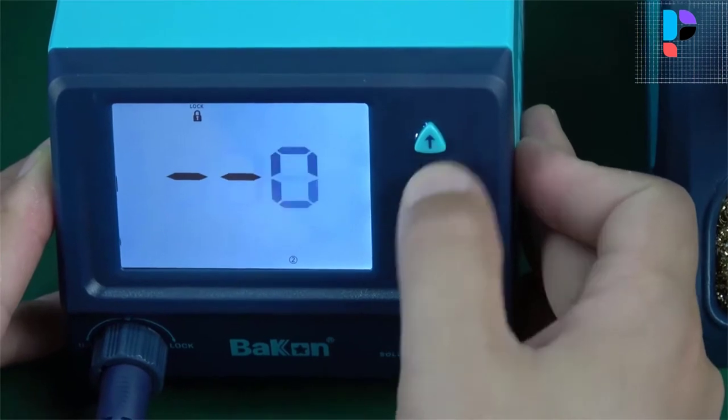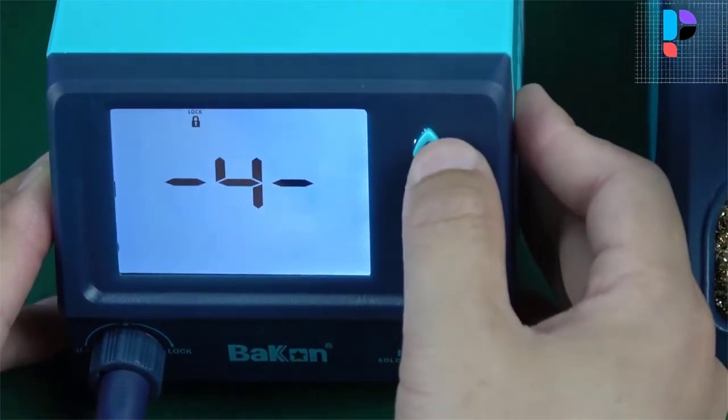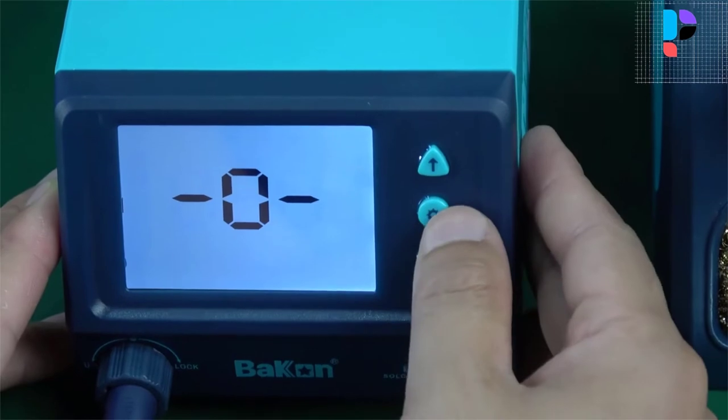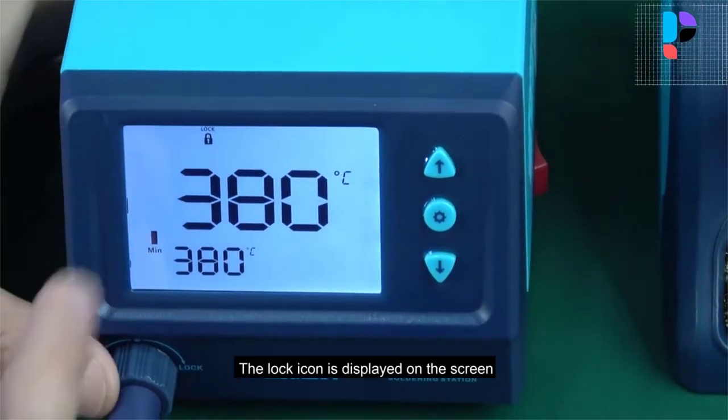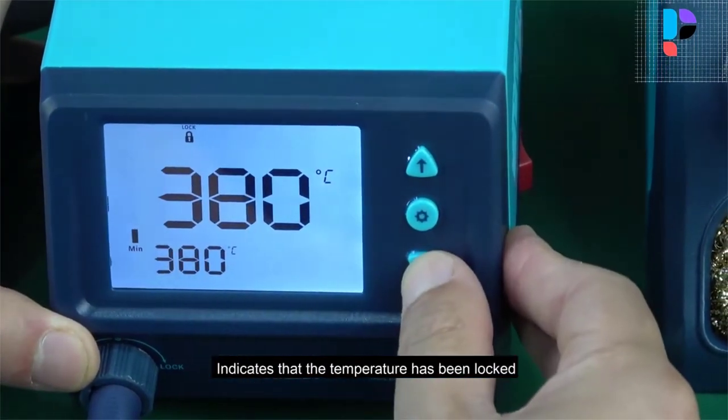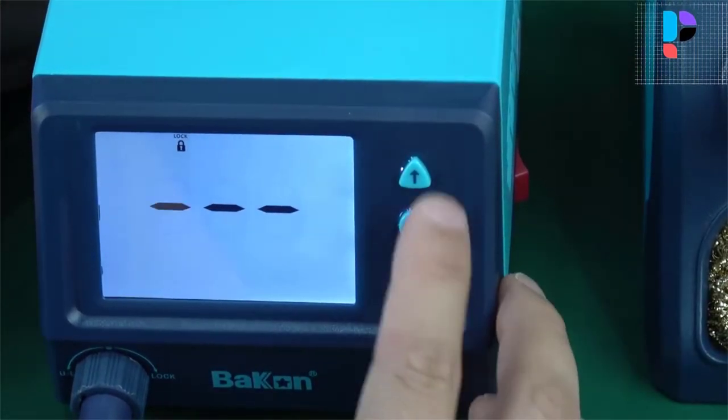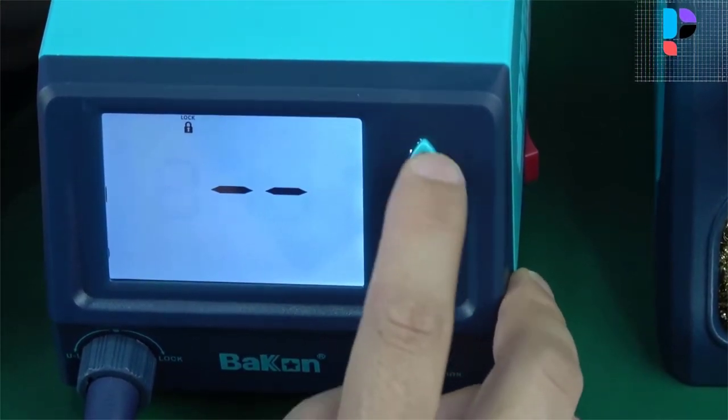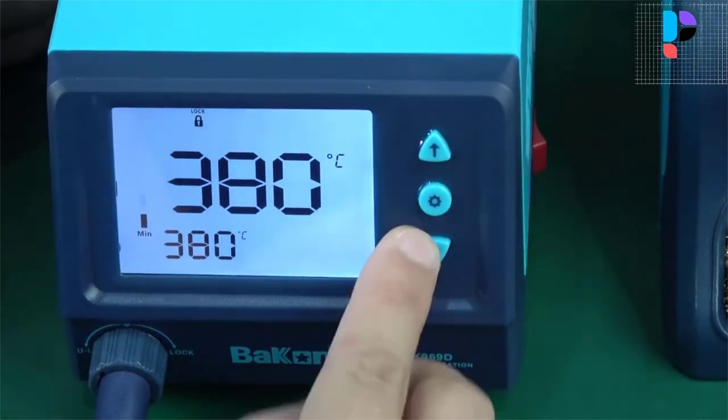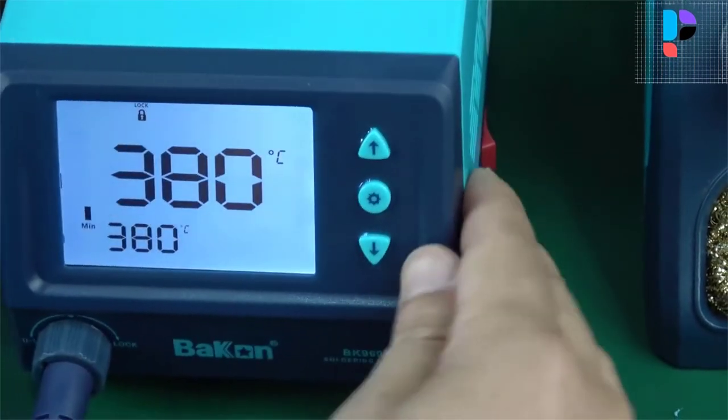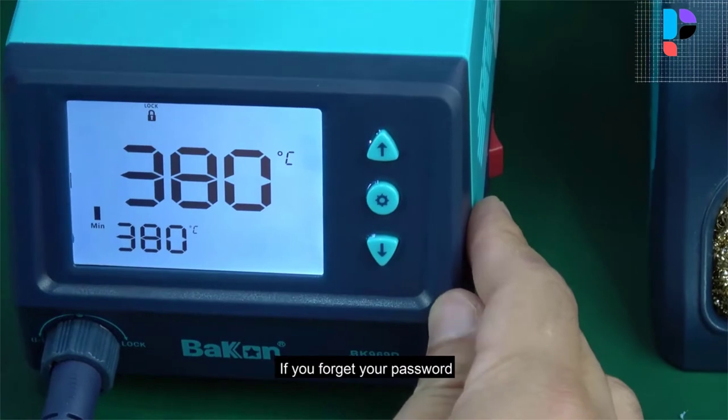The handle adopts patented ergonomic design and feels comfortable. Password protection to avoid illegal modification of settings. Soldering station uses high power electric iron heating core with a new updating PCB circuit design. A soldering temperature of 662 degree Fahrenheit is reached after about 15 seconds.